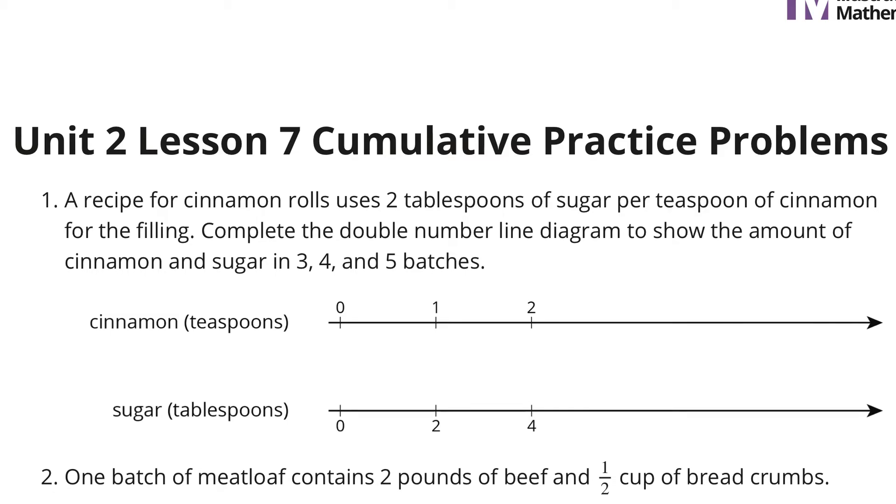In question 1, a recipe for cinnamon rolls uses 2 tablespoons of sugar per teaspoon of cinnamon for the filling. Complete the double number line diagram to show the amount of cinnamon and sugar in 3, 4, and 5 batches. We have cinnamon as our top and sugar on the bottom line.